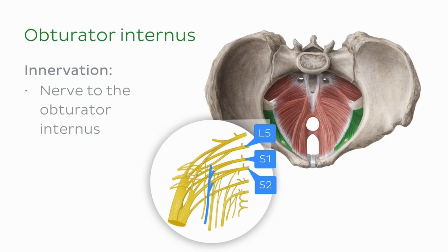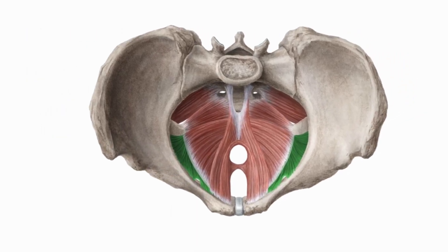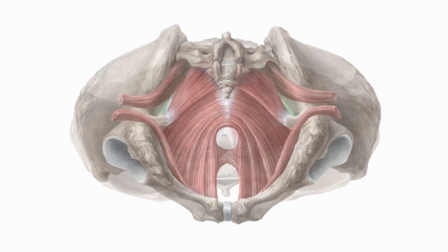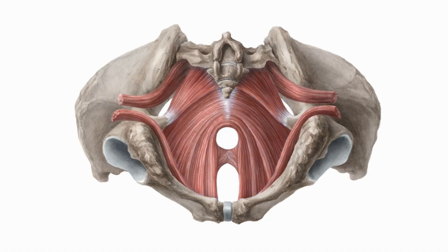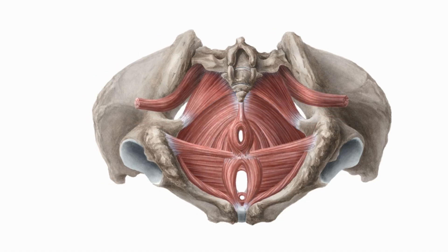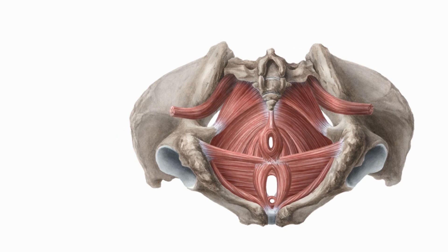Now that we've covered the muscles of the pelvic floor and the walls, we're going to move inferiorly to identify some more muscles in this region. What we can see here is the levator ani, which makes up part of the pelvic floor and supports all of these pelvic organs. Inferior to the levator ani, we can see some more muscles — these are the muscles of the perineum.